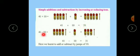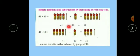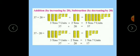Similarly, 41 minus 10. So 40 minus 10 is 30, so 41 minus 10 is 31. Now next, addition by increasing by 20 and subtraction by decreasing by 20. Like here we add 10, in the same way we can add 20 also.